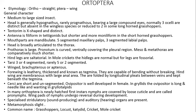Cerci are short and unsegmented. Ovipositor is well developed in females. In Gryllids, the ovipositor is long and needle-like, while in many Orthoptera it is reduced. Newly hatched first-instar nymphs are covered by a thin cuticle and are called pro-nymphs; wing pads of limbs undergo reversal during development. Specialized stridulatory organs for sound production and auditory organs for hearing are present. Metamorphosis is slight — sometimes called paurometabolous or hemimetabolous — and insects undergo gradual metamorphosis in Orthoptera.